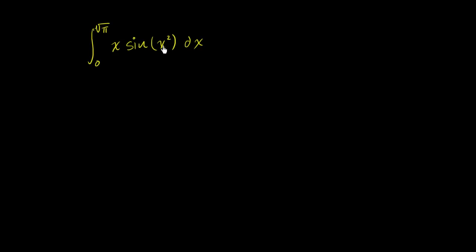We see here this expression x squared, and if we were to just take the derivative of x squared, it would be 2x. We have an x here, so it's almost a 2x. To turn this x into 2x, we could multiply it by 2.